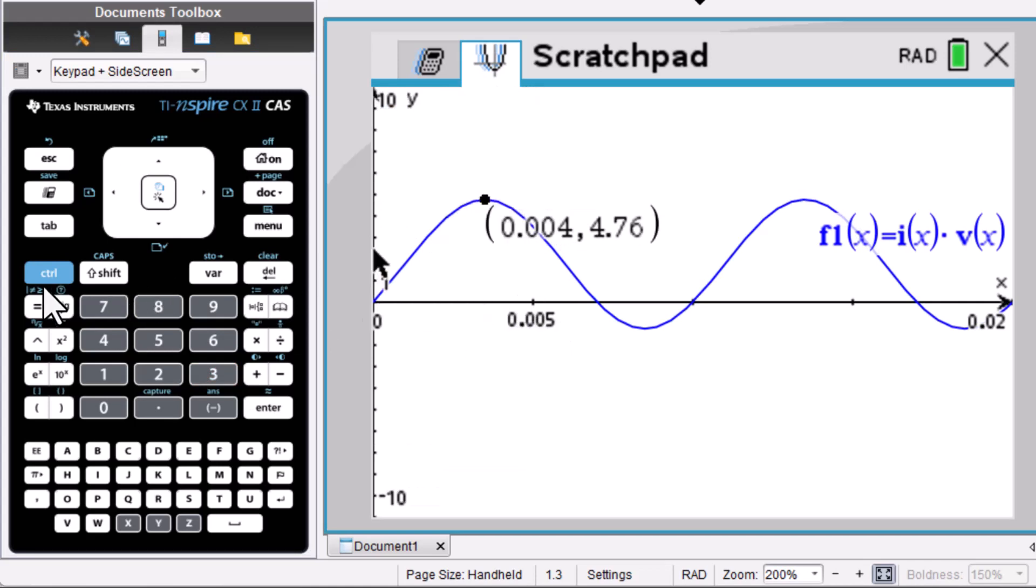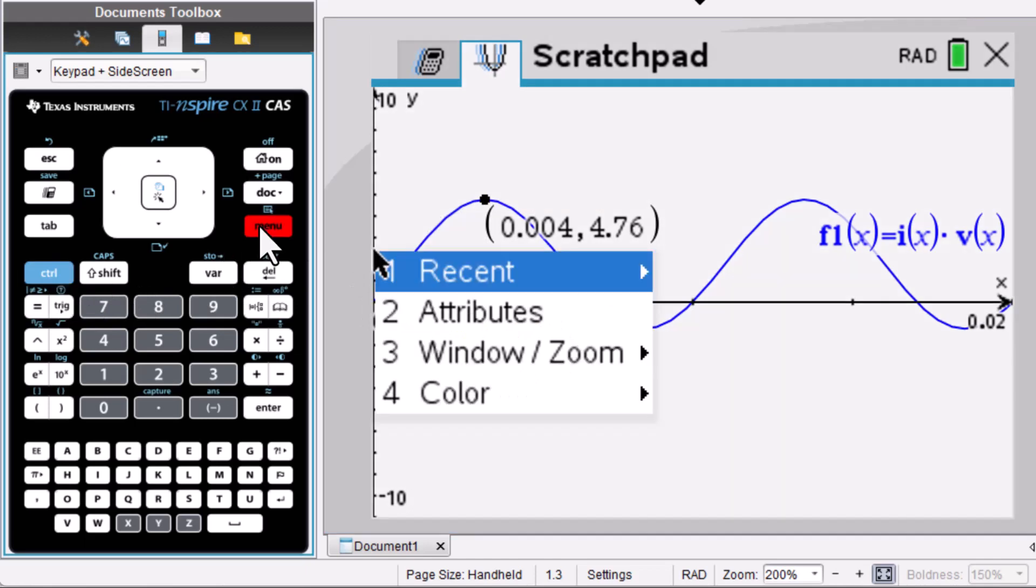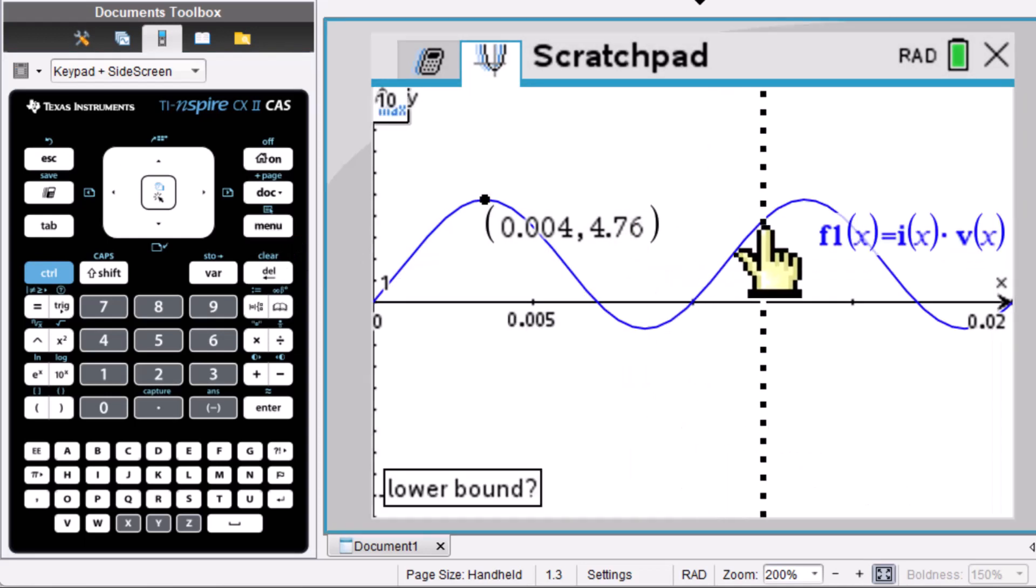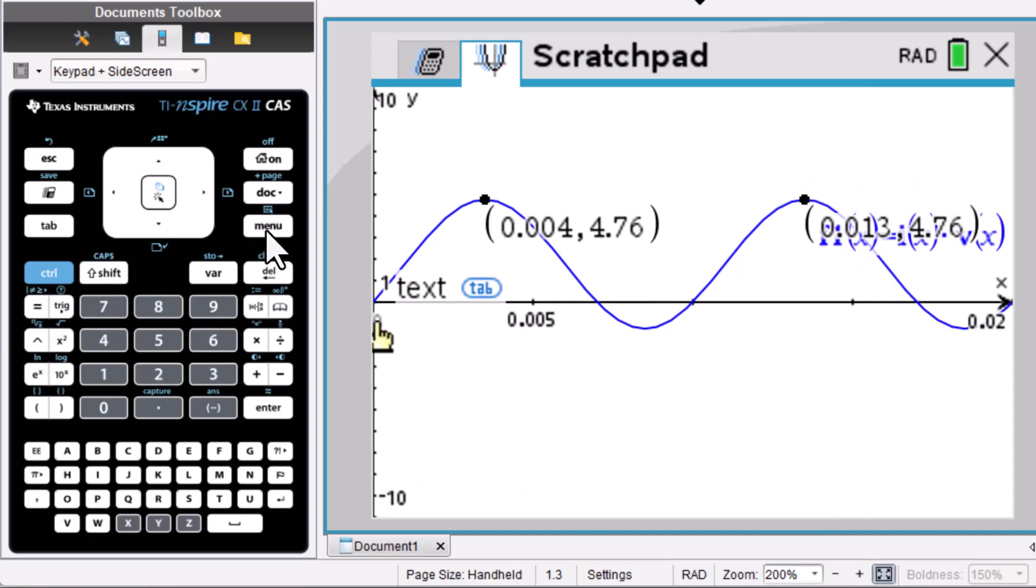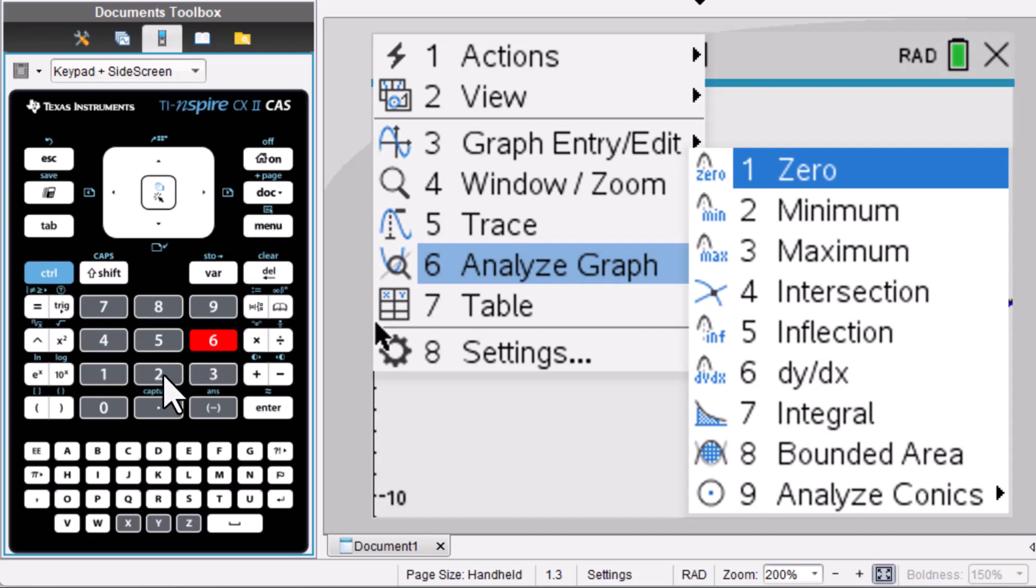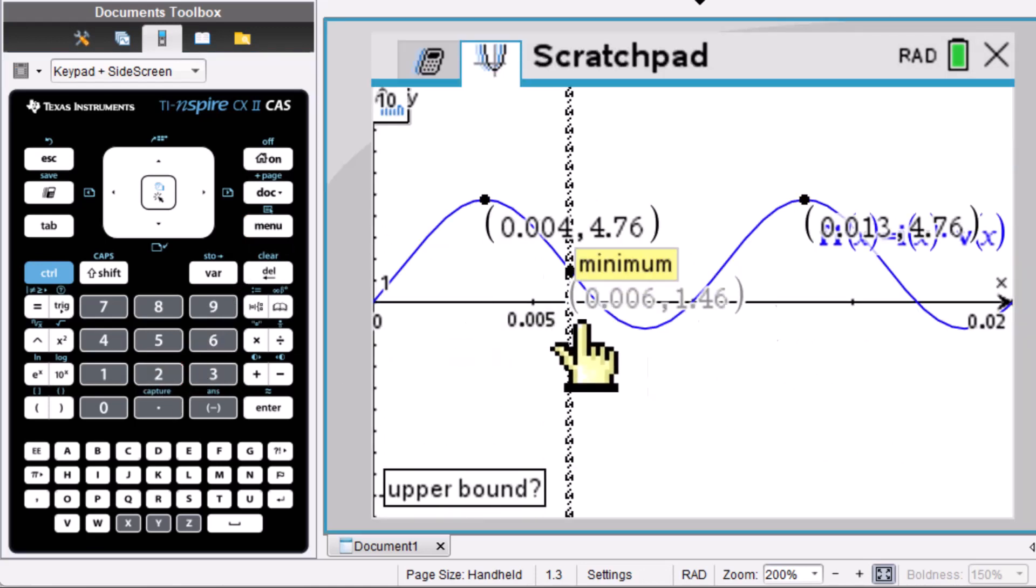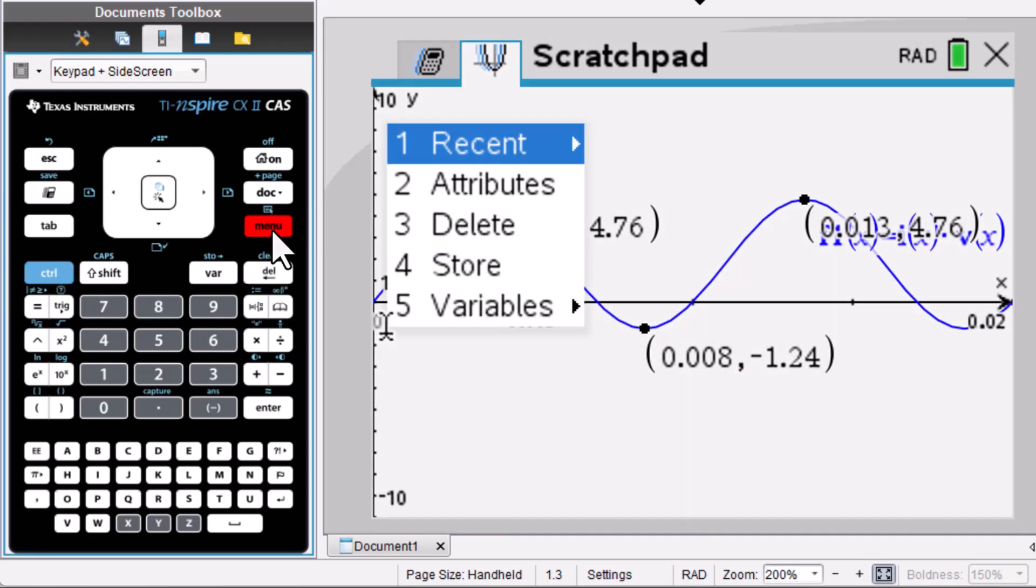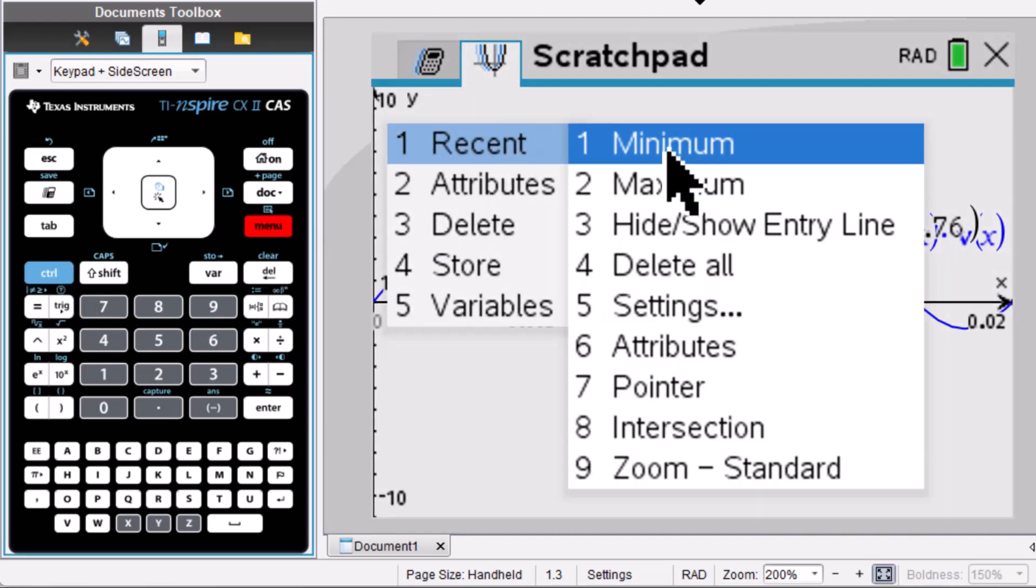Then control menu, go to recent. We did a maximum. Then menu again, go to analyze graph, minimum.